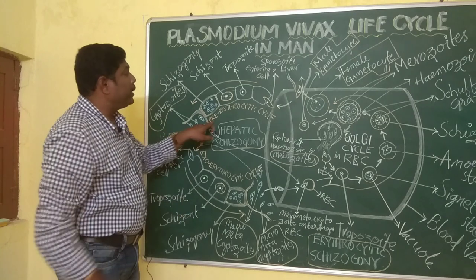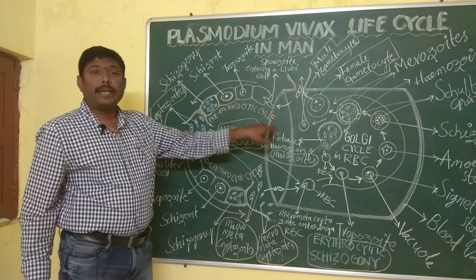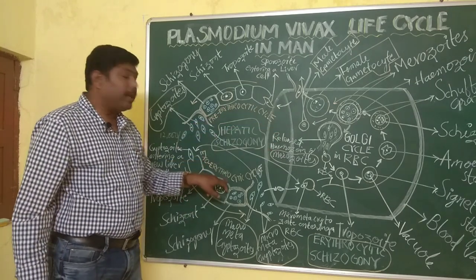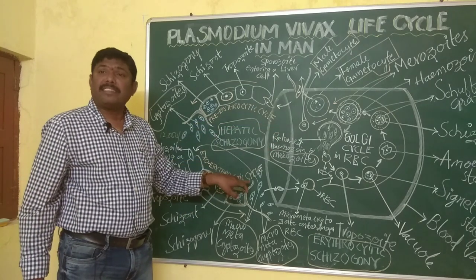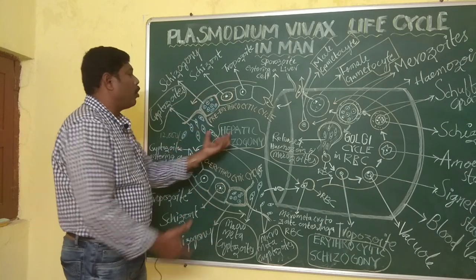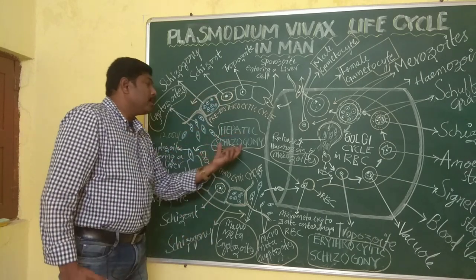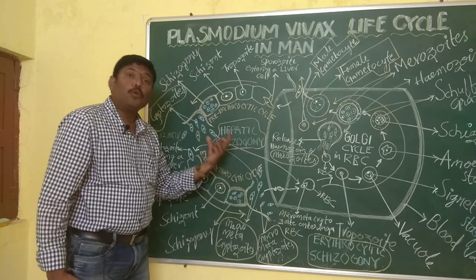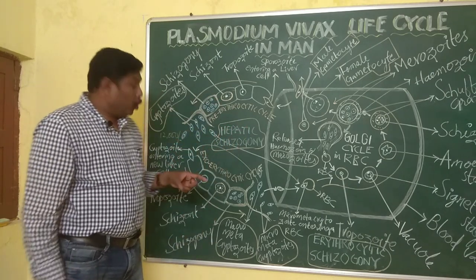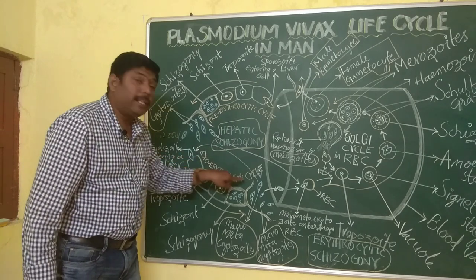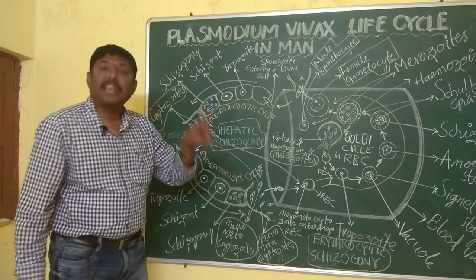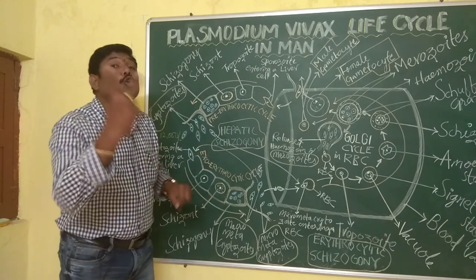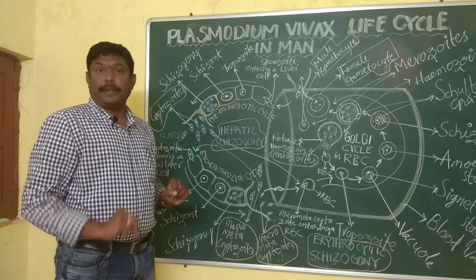These two cycles — the pre-erythrocytic cycle and the exo-erythrocytic cycle — are combinedly called Hepatic Schizogony. To complete the exo-erythrocytic cycle, it takes two days.